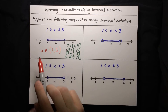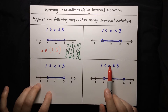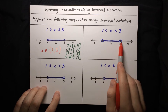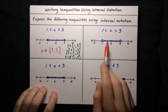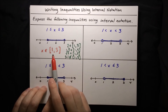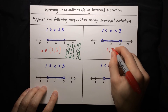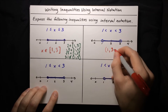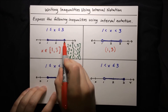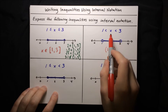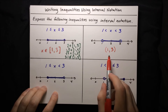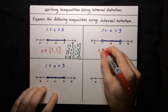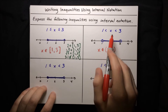Now let's continue with the next example: x is greater than 1 and less than 3 — strictly greater than, strictly less than — so open circles. x cannot be equal to 1 or 3, but it's everything in between. In interval notation, we still write the endpoints 1 and 3, but since we have open circles and strict inequalities, we use parentheses instead of brackets. So the interval is (1, 3), and to say that x is in this interval, we write x ∈ (1, 3).